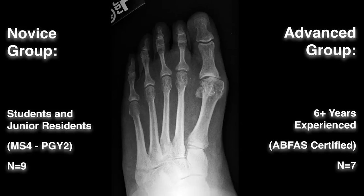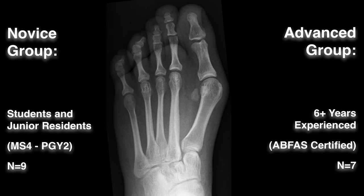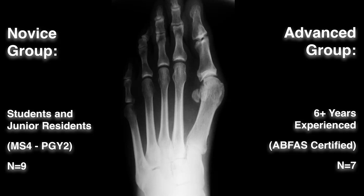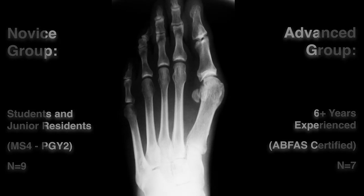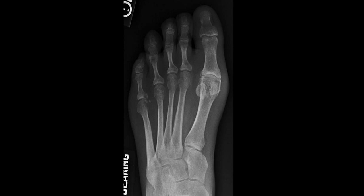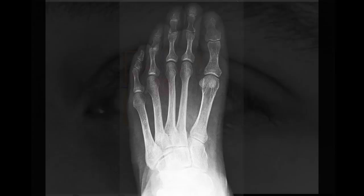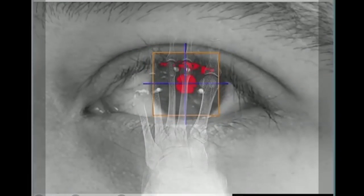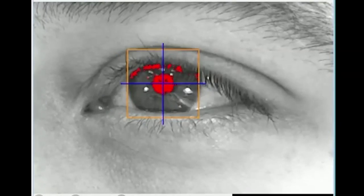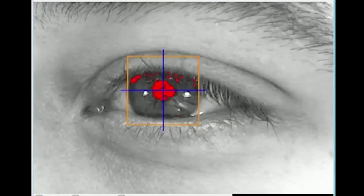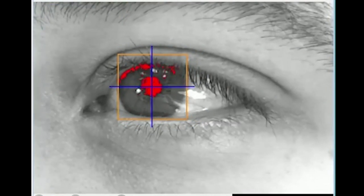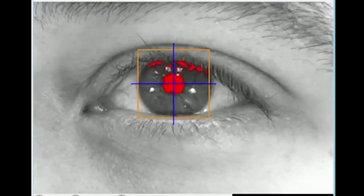Each participant was asked to rate the severity of the bunion deformity as one of four options: either no bunion, mild, moderate, or severe. Participant ratings were recorded for each of the twenty-five images. During this testing, eye movement and gaze patterns were recorded and correlated with the images presented on screen to the testees.